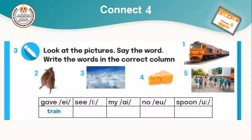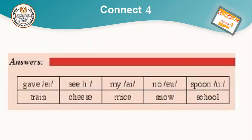Let's move to another part. We will look at pictures, say the word, and write the words in the correct column according to similar pronunciation. We have: gave, train, see, cheese, my, mice, snow, spoon, school.